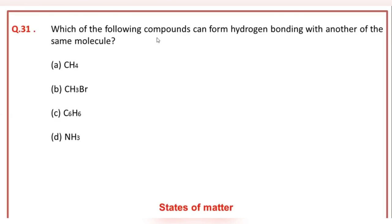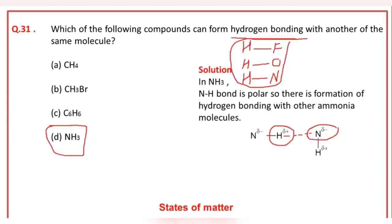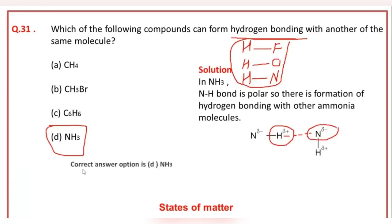Which of the following compounds can form hydrogen bonding with another molecule of the same kind? Ammonia is the correct answer of this question.